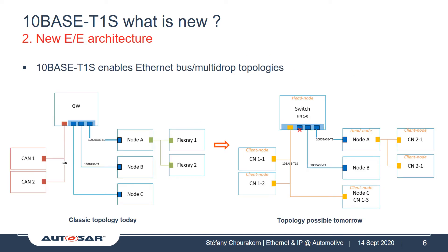The second innovation in 10BaseT1S is to enable bus topology for Ethernet, also called multidrop. This allows us to redesign EE architectures and extend the Ethernet network. Depending on the application, we could replace legacy bus topologies with Ethernet multidrop — in that case, only a switch in our topology is necessary and no more gateways are needed. This will unify the network and bring us a step forward toward the all-Ethernet or service-oriented architecture. We could also replace some existing Ethernet connections with 10BaseT1S, offering more suitable bandwidth to some ECUs.